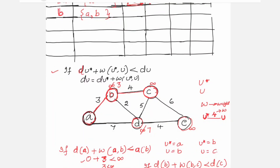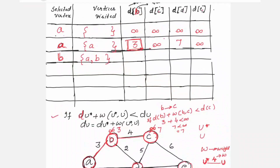For B to C: d(B) + w(B, C) = 3 + 4 = 7 < d(C) = infinity — true, so update d(C) to 7. In the table, B to C changes from infinity to 7. Similarly, compute B to D.